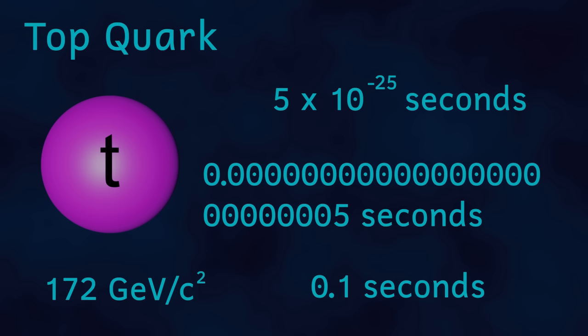So short is their existence, that there isn't even enough time for the strong force to form. Meaning these particles are unable to join with other particles to form larger particles, known as hadrons. Protons and neutrons are examples of hadrons due to them being formed from 3 quarks each.